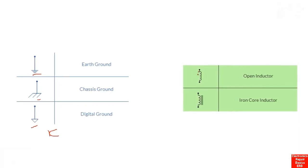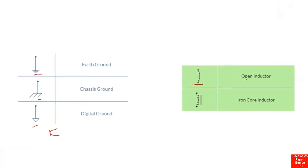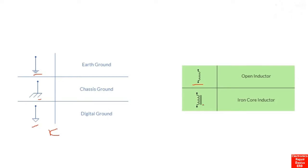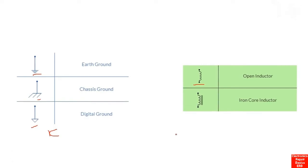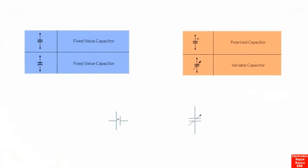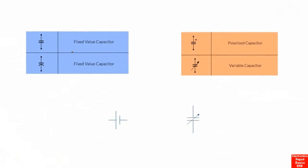Here we have inductors. This first symbol is an open inductor — also called a simple inductor or coil. Here we have an iron core inductor, which is an inductor with an iron core indicated by the lines above the coil symbol.